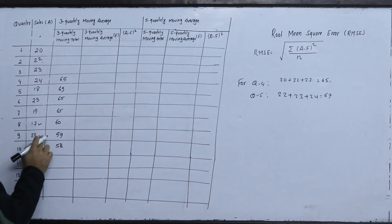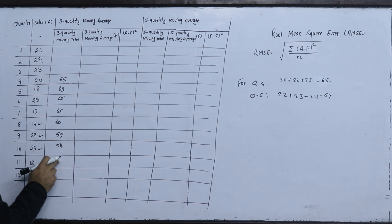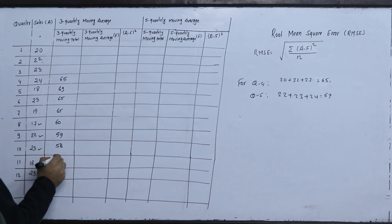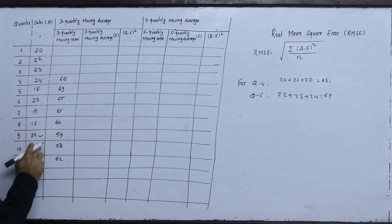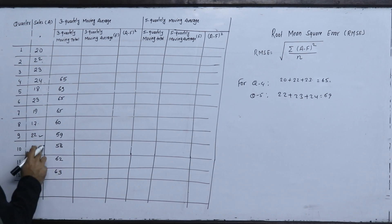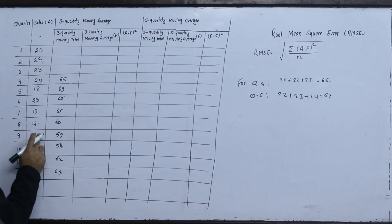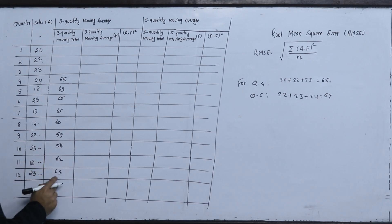Then 17, 22, 23 gives 62. Then 22, 23, 18 gives 63. Then 23, 18, 23 gives 64. So the 3-quarterly moving totals are: 65, 69, 65, 65, 60, 59, 58, 62, 63, 64.